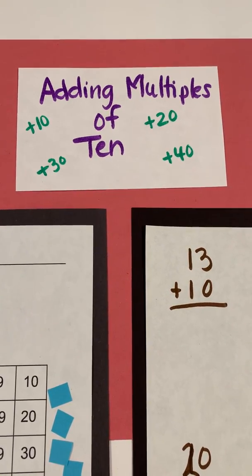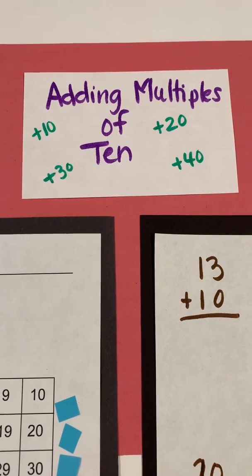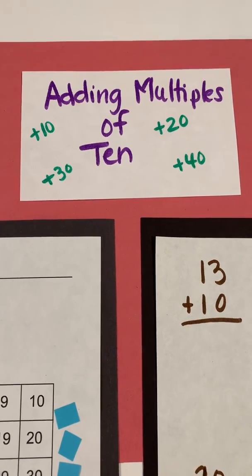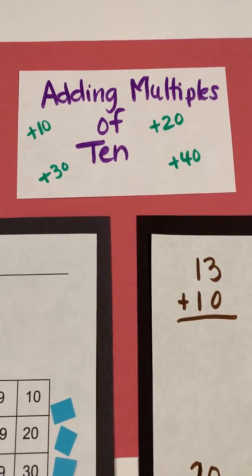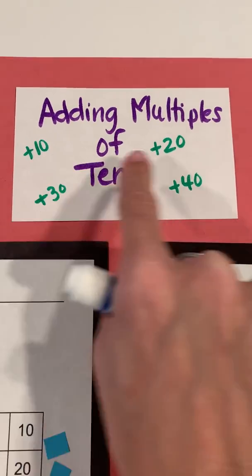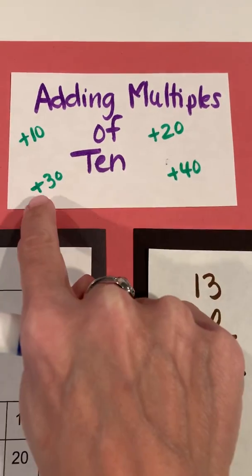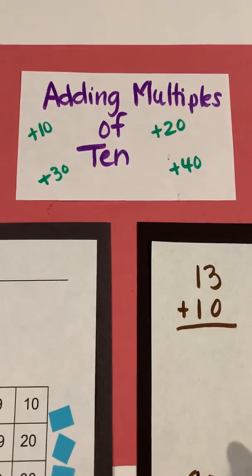This video will focus on adding multiples of 10 to a two-digit number. When we talk about adding multiples of 10, we are talking about adding 10 plus 20 plus 30 or plus 40 to a two-digit number.